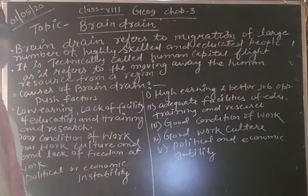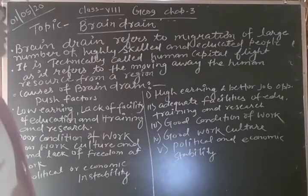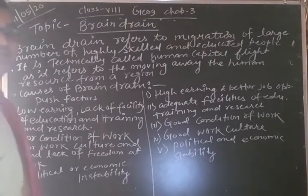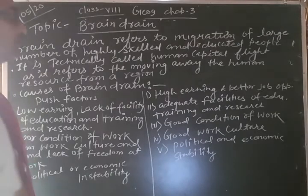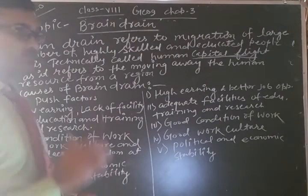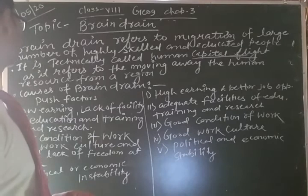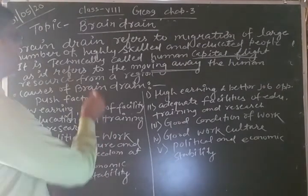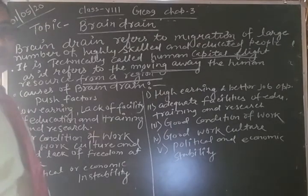The next topic is brain drain. Brain drain refers to the migration of a large number of highly skilled and educated people — like doctors and scientists. It is technically called human capital flight, because it involves the moving away of human resources from a region and is a main source of income for governments and countries.